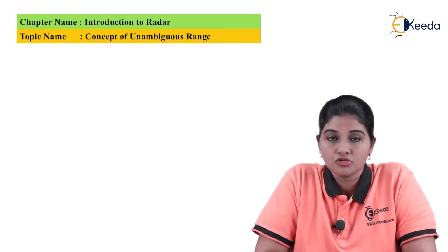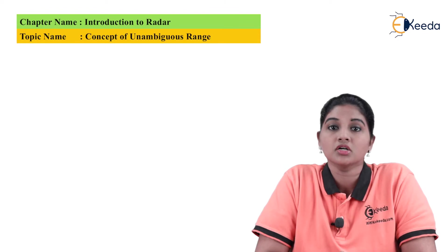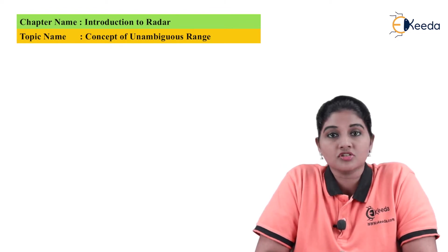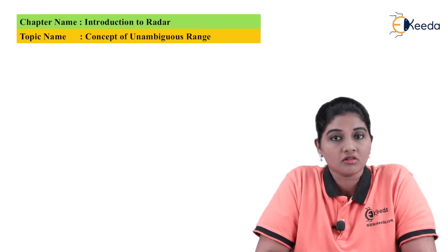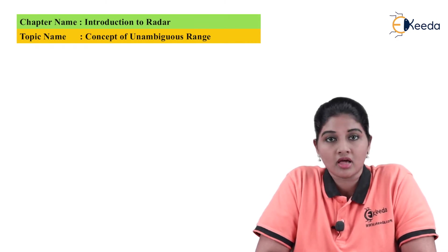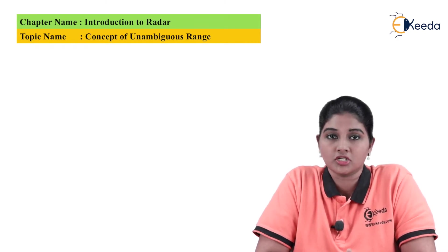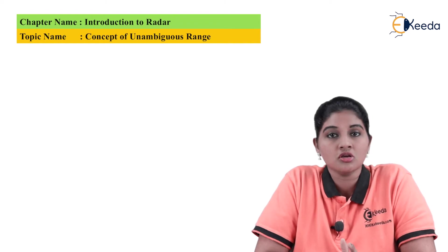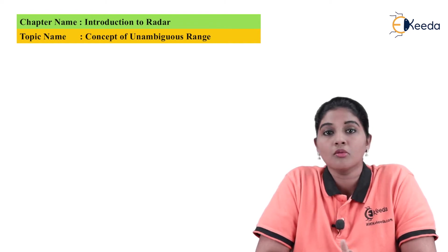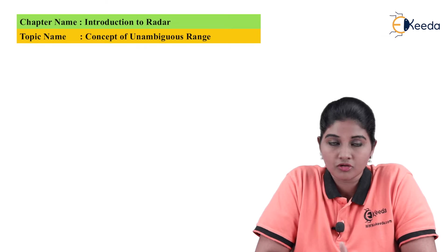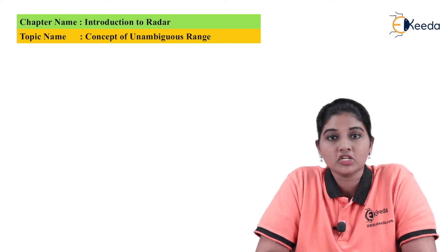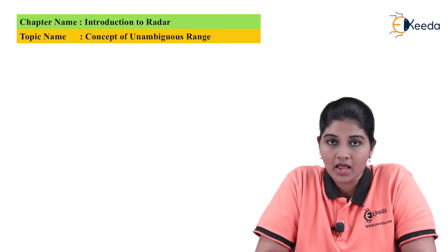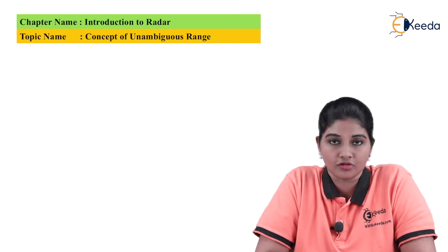We know that radar is basically used for detection and location of the target. The range of the radar plays an important role in any application, including military applications, remote sensing applications, measuring speed of vehicles on the highway, law enforcement, and many non-contact measurements in industrial applications. All these applications have one important parameter, and that is the range of the radar.